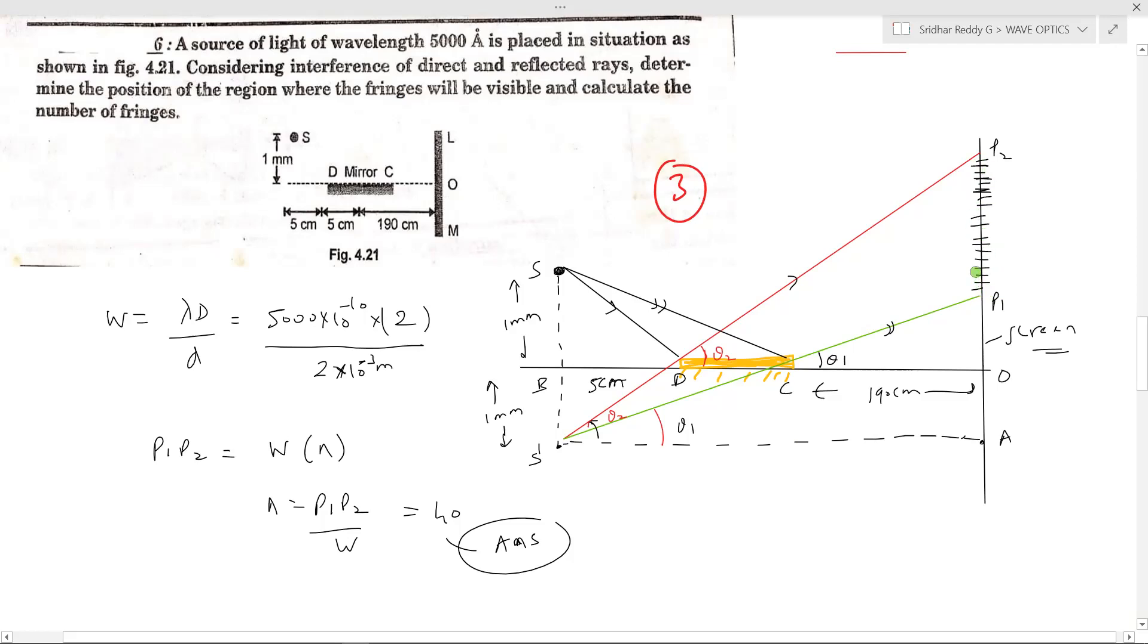Now he's asking determine the position of the region where the fringes will be visible. He's asking to get expression for P1 P2. There's a mirror. Now the distance, length of the mirror is 5 cm. So the length of mirror is 5 cm. Then the distance is 190 cm. This is 5 cm and the source is at height of 1 mm. So where the corresponding image will be formed, S dash. So this S and S dash will become like coherent sources of light.